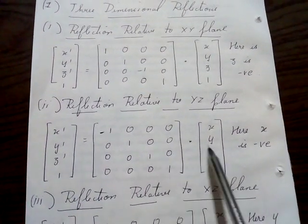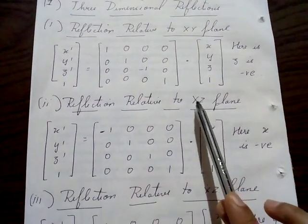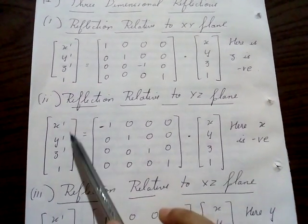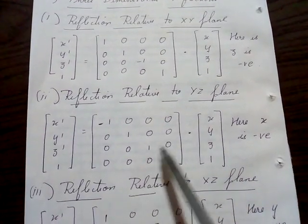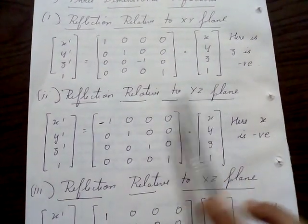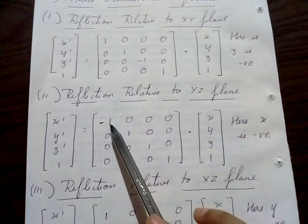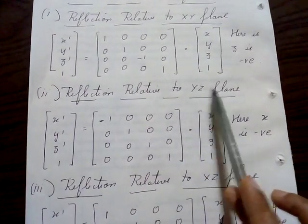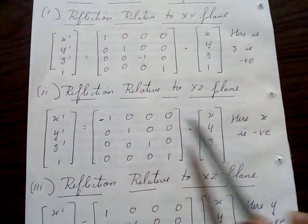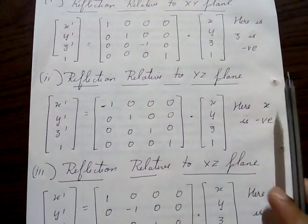This is the matrix when doing reflection relative to the YZ plane. Here X is negative — when reflecting across the YZ plane, X will be negative, and these are the old coordinates.